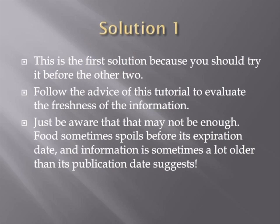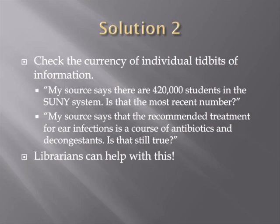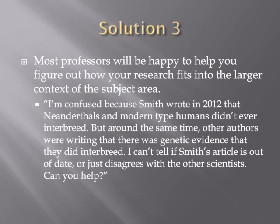The first solution is what we're going to go through in this tutorial. If that doesn't work, and even after you've followed the advice of this tutorial you can't tell if the information is current enough, a librarian can help you verify individual facts and figures by cross-checking with sources whose reliability and currency are known. The third solution is to ask your professor. They're experts in the subject area, and they have the broad-based and up-to-date knowledge to judge a piece of information based on whether it's out of date, innovative, or just off the wall.